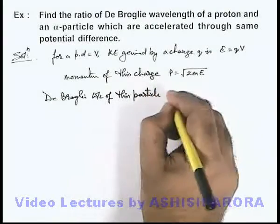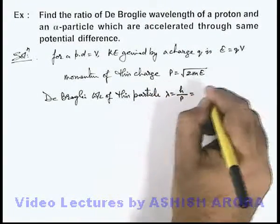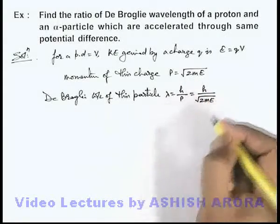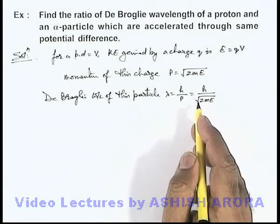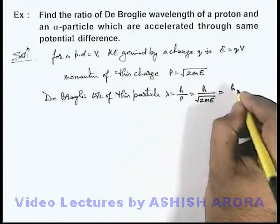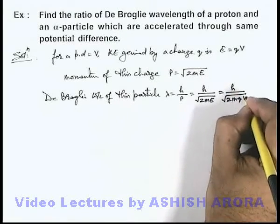We can simply write lambda as h by p, which can be written as h over root 2mE. This is the de Broglie wavelength of a charged particle which is accelerated with potential difference V. So this can be written as h by root 2mqV.